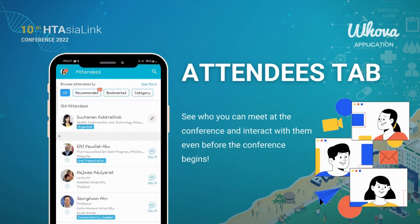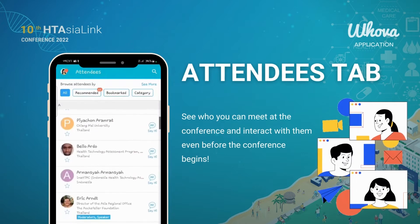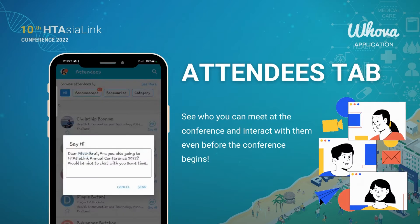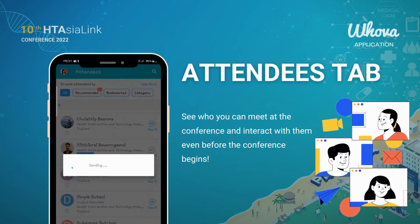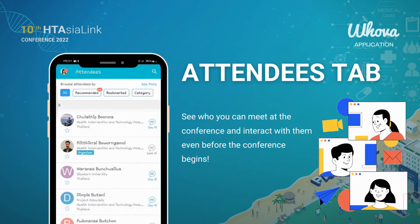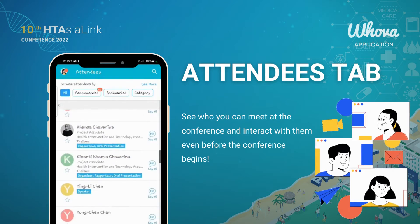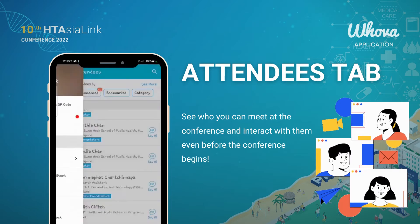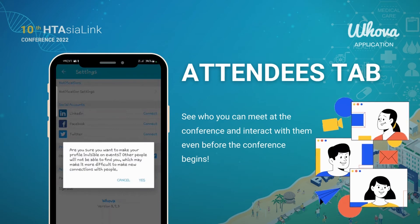The Attendees tab shows a list of those joining this conference. You can see who you can meet at the conference and interact with them even before the conference begins. You can also convert it to a private group chat by inviting more people. If you don't wish to be listed, you can change the setting in your profile by turning off the 'other attendees can see me' function.